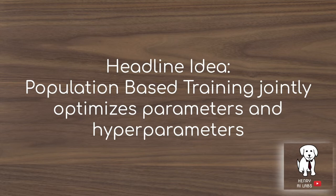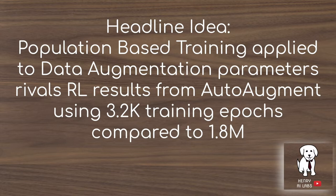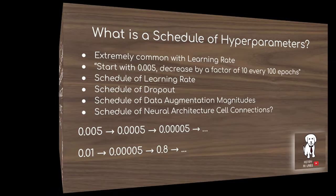Another headline idea is that when population-based training is applied to data augmentation, it rivals the performance of AutoAugment, which uses 1.8 million epochs, whereas population-based augmentation only uses 3.2 thousand. So unless you're a massive company, this is a much more practical algorithm for optimizing hyperparameters.